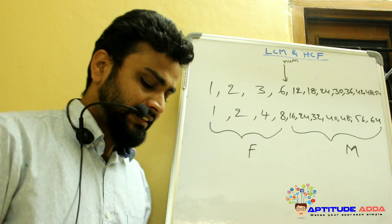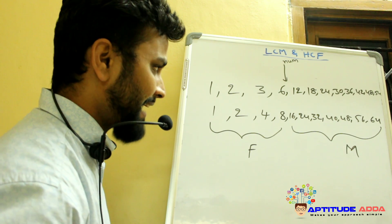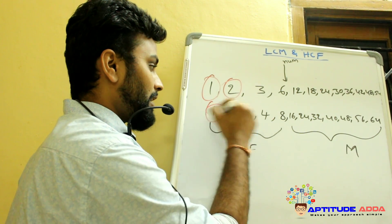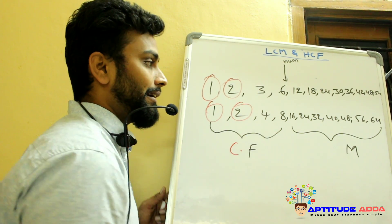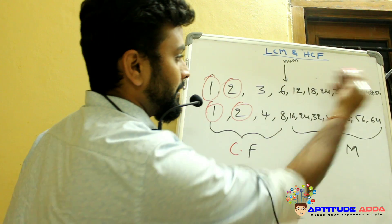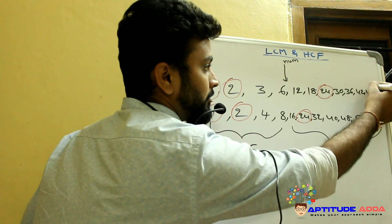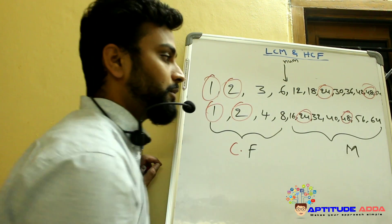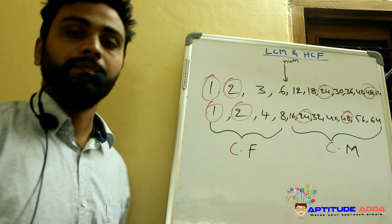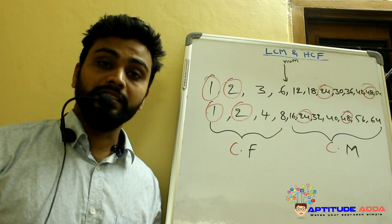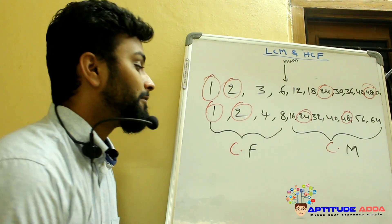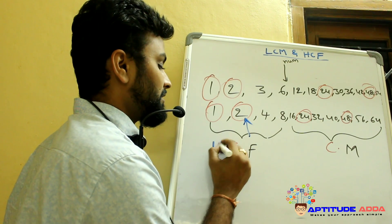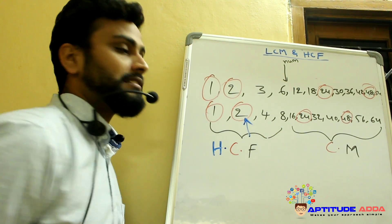If you observe, are there any common factors for 6 and 8? Yes, 1 and 2 are common factors, and 24, 48, 72 and so on are common multiples. Out of these common factors, which one is the highest one? 2 is the highest one, so it is HCF.